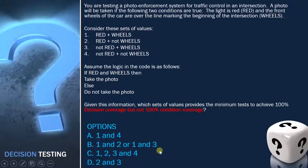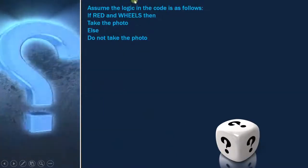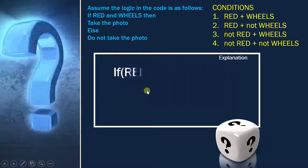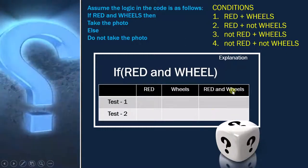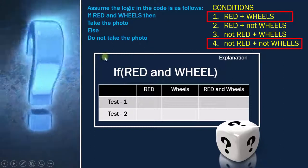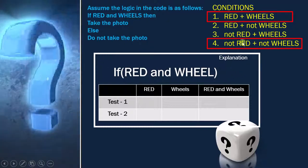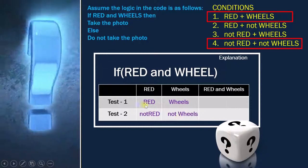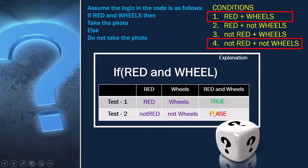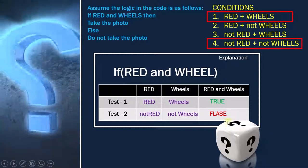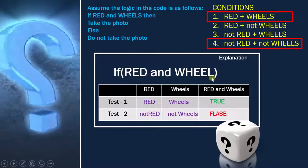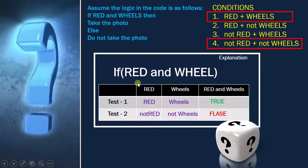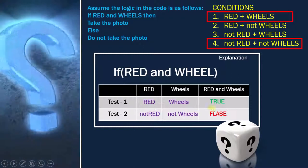Now let's analyze this as we have done previously. This is the code and the condition given. We will start with this table. If I take the first option and the last option, I get red and not red for the light condition, and wheel and not wheel for the wheel condition. With these two combinations, the first gives true and the last gives false. So we have achieved 100% decision coverage because the decision became true once and false once. But the question asks it should not cover condition coverage, so we have to check conditions also.